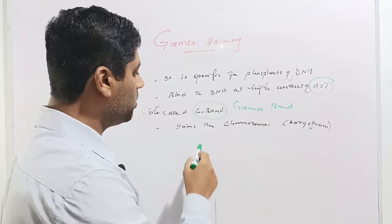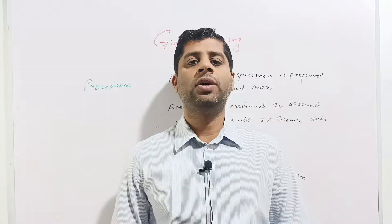Giemsa usually stains the chromosomes and is also used in chromosome mapping, which is technically called as karyogram.